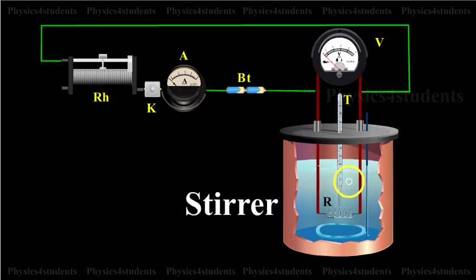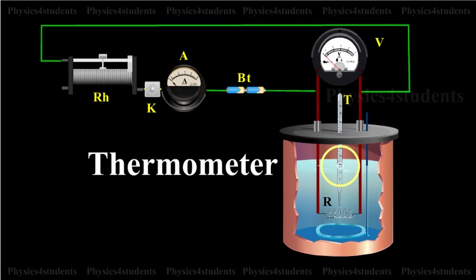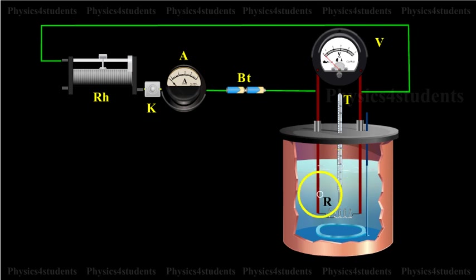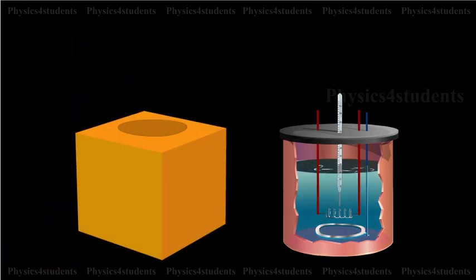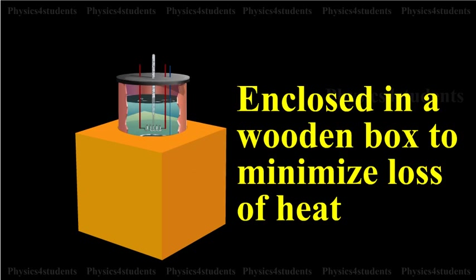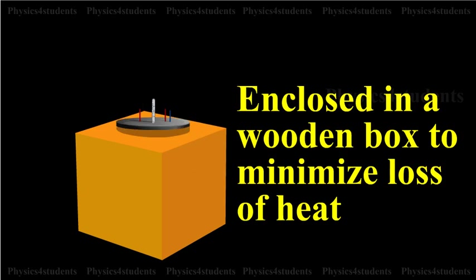A stirrer and a thermometer T are inserted through two holes in the lid. Two-thirds of the volume of the calorimeter is filled with water. The calorimeter is enclosed in a wooden box to minimize the loss of heat.